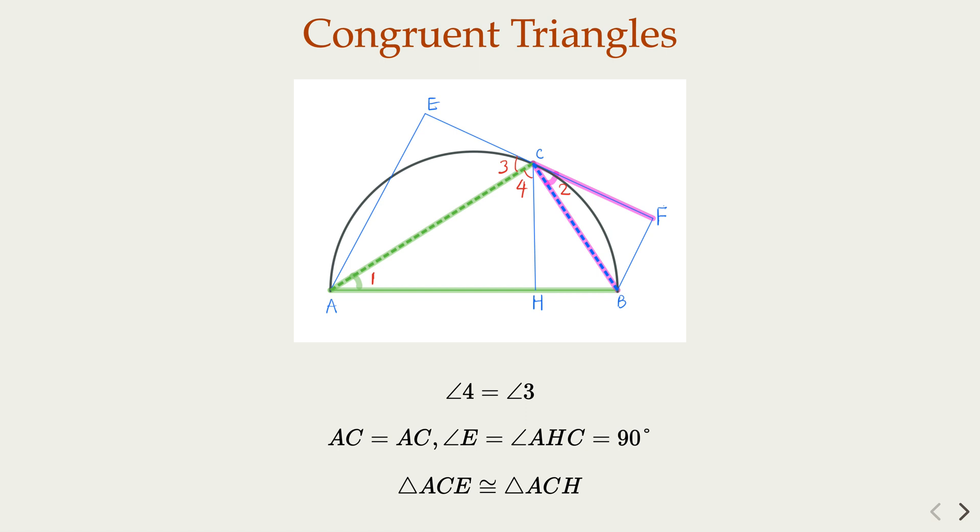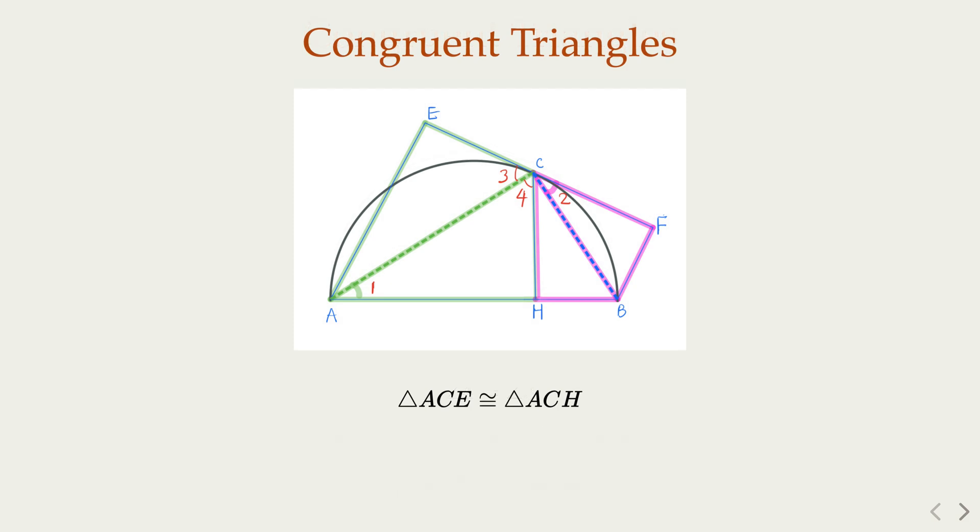Now, use a similar argument, you can have the other side. You know, it's symmetrical almost, right? And then you have the congruent triangle BCH and BCF. Now, from these two pairs, we know that CH must equal to CE. In the meantime, CH equal to CF.